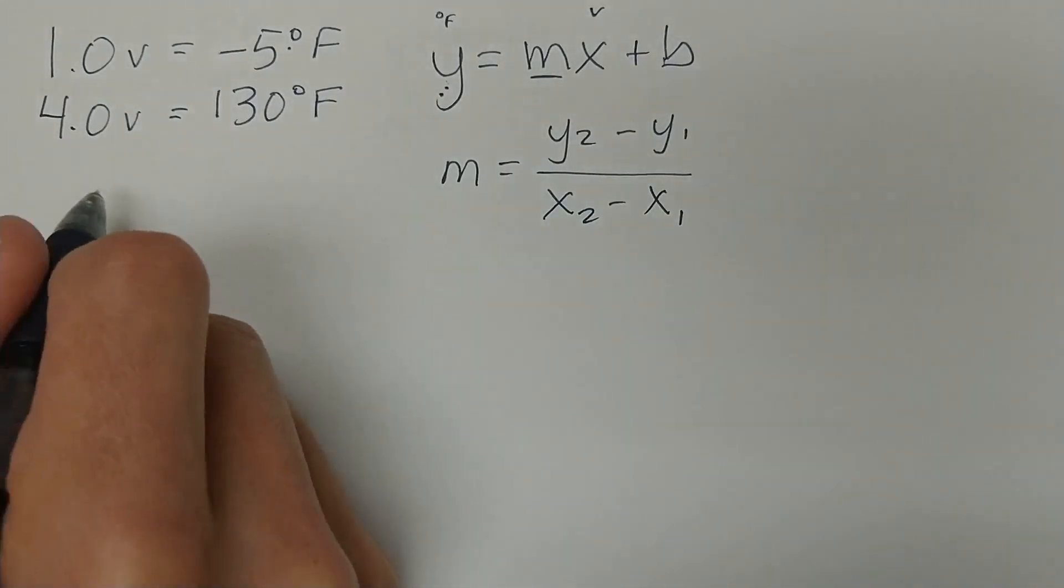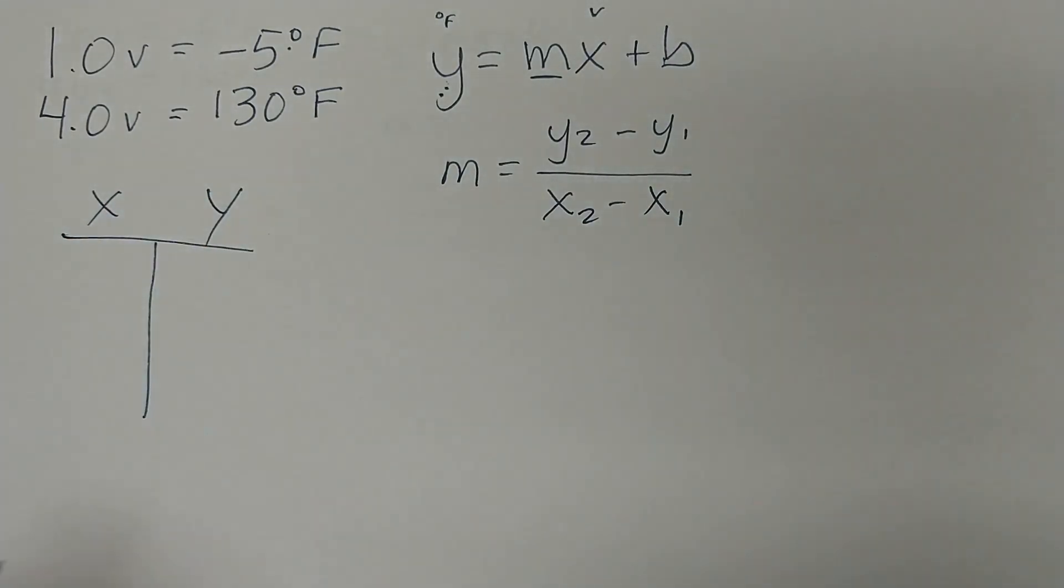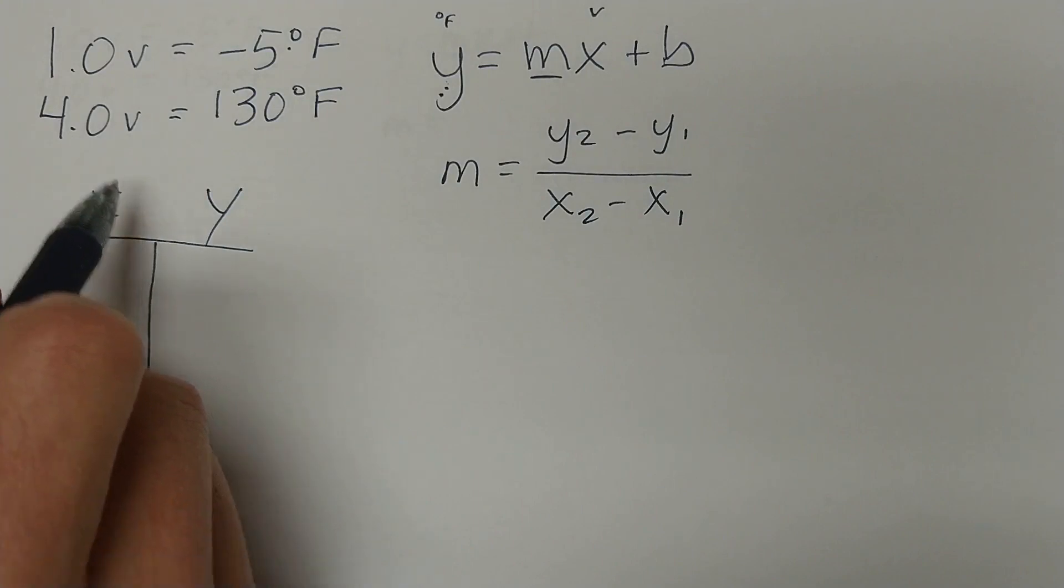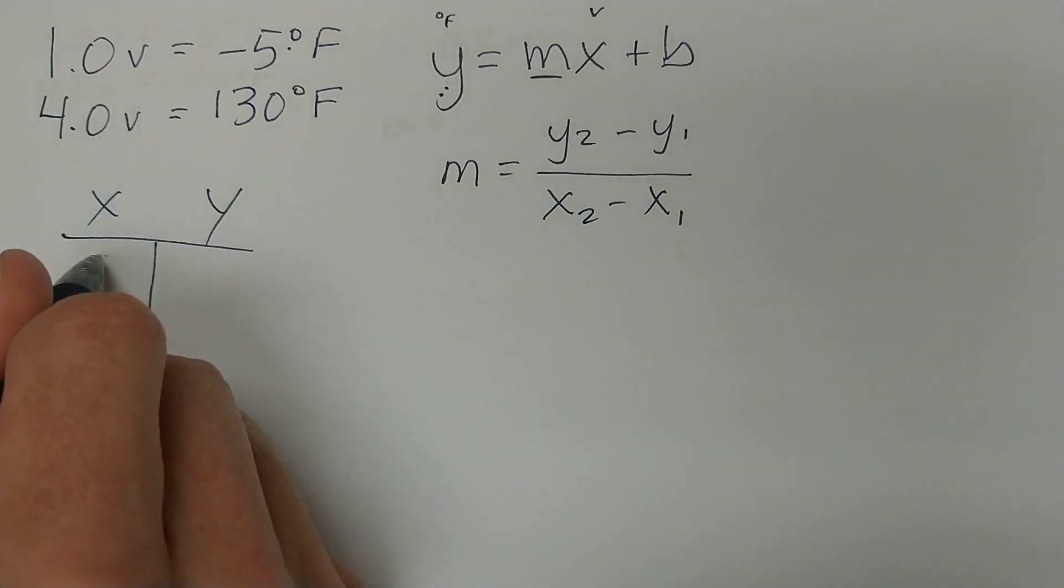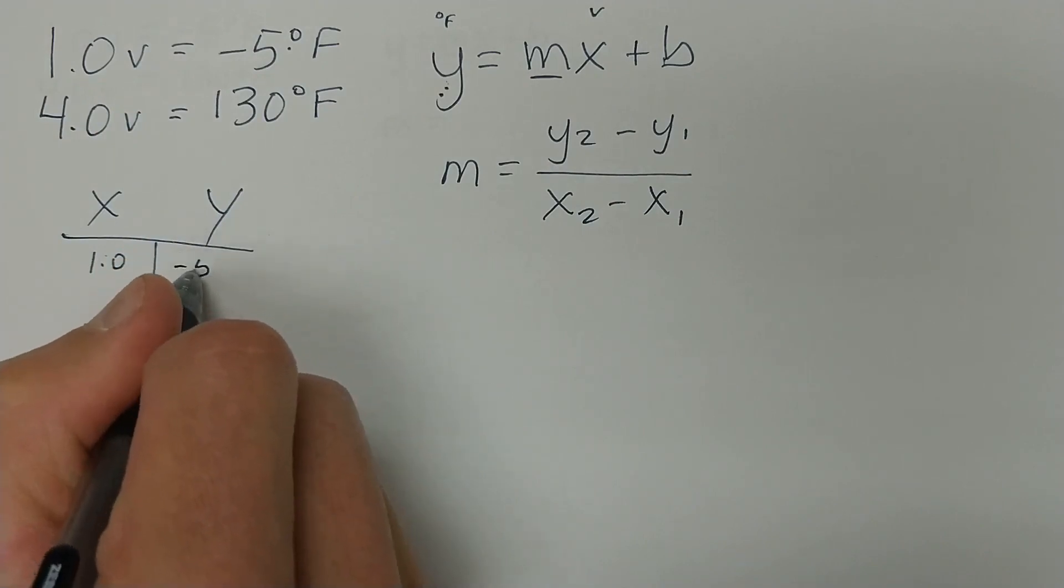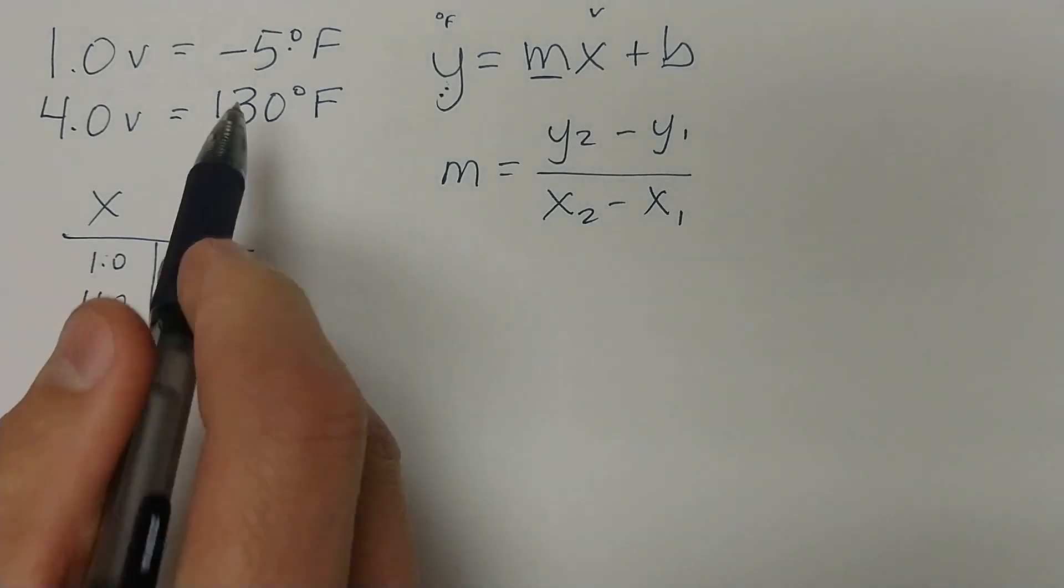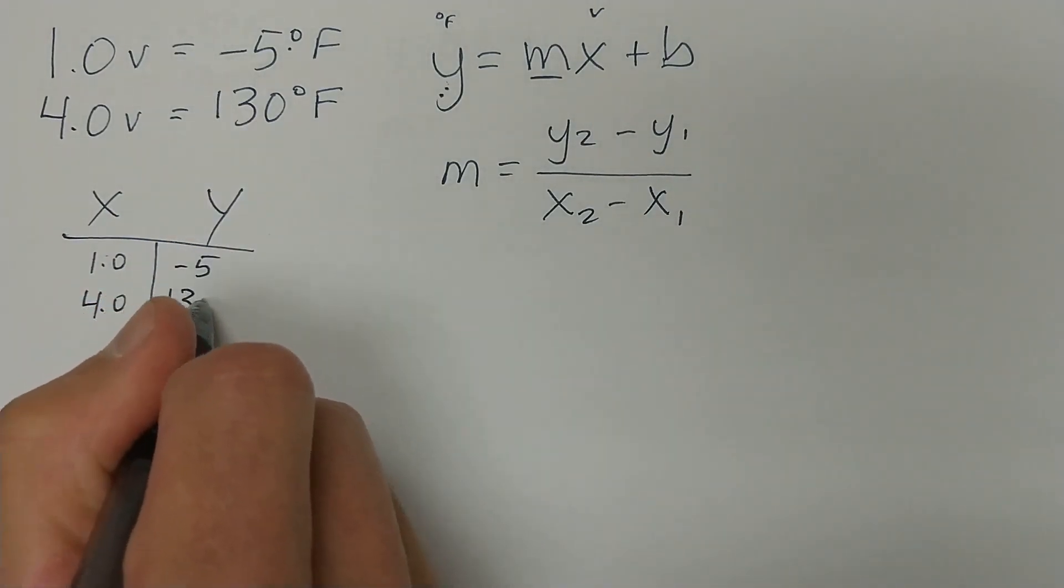Now to find these, we would come over here and create a T chart. At least this is the way I like to do this to keep it simple. We find our first X, which is one volt, and our first Y, which is negative five. The second X is four volts, and the second Y is 130 degrees.